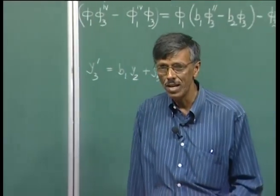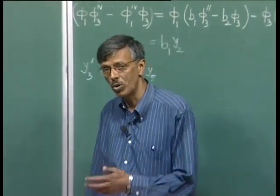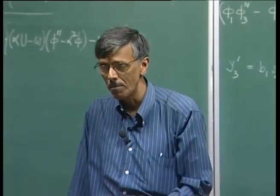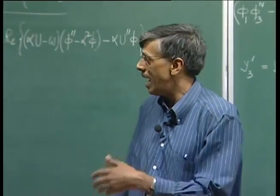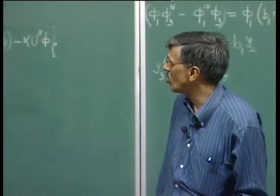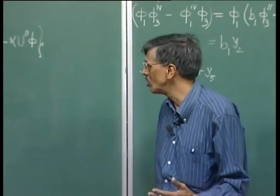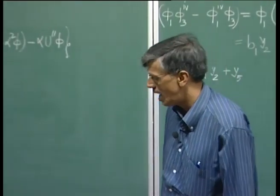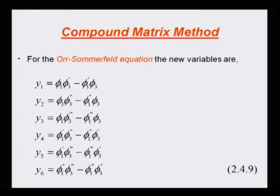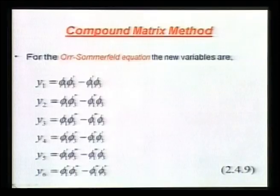Phi_3 actually grows much more rapidly as you descend inside the shear layer compared to phi_1. This disparity causes the stiffness problem. This was what we concluded, and we came to the conclusion that we will use a method which can do away with these problems.